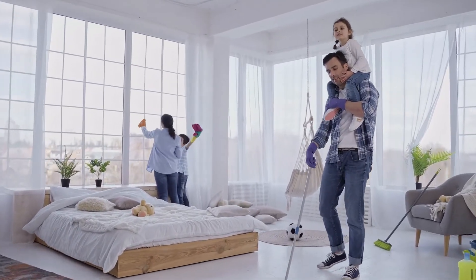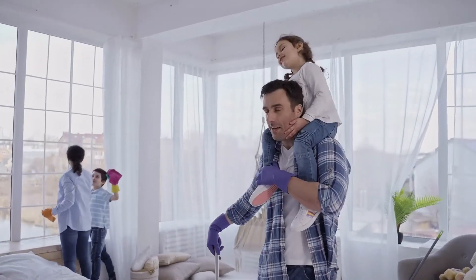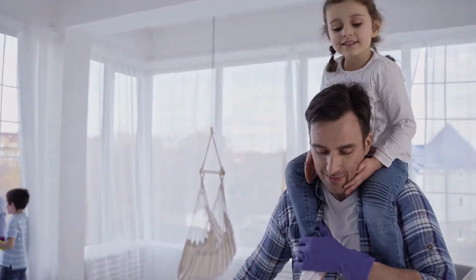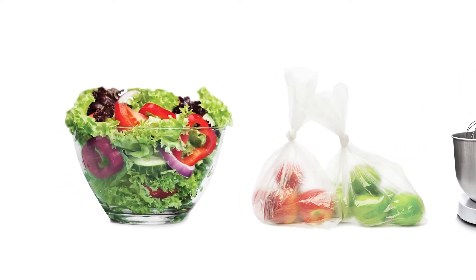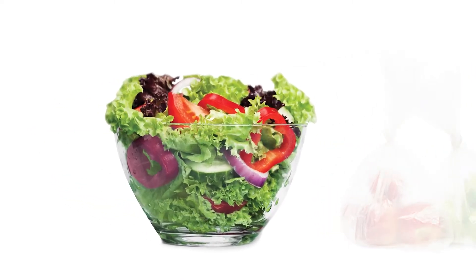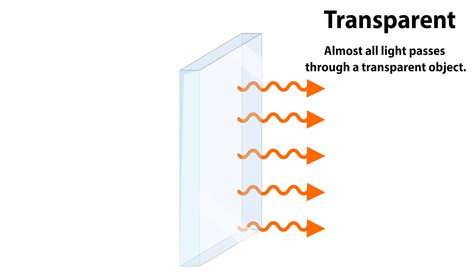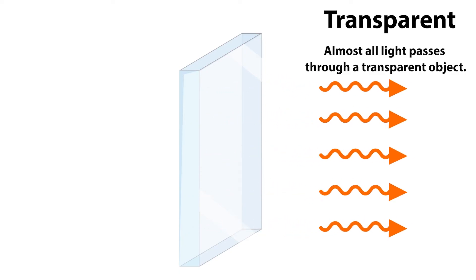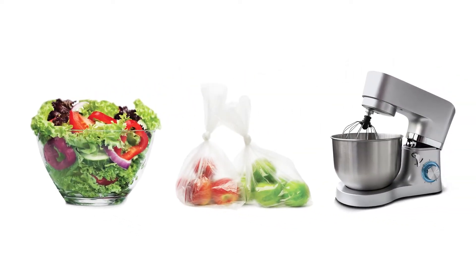Materials can be different in their transparency. Transparency is the property of allowing light to pass through. Look at the objects below. The glass bowl is transparent. Transparent materials allow almost all light to pass through. This is why you can clearly see the salad in the bowl.